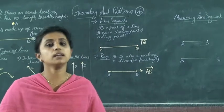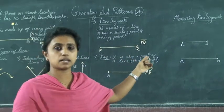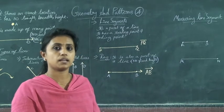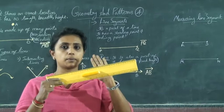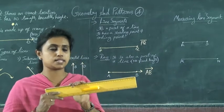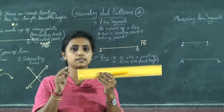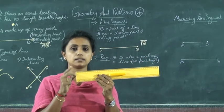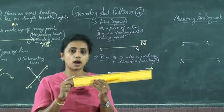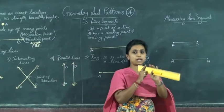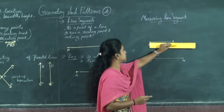Next is Measuring Line Segments. How do we measure a line segment? For this, we use a ruler or scale. First, place the 0 mark of the scale on point R. While placing the scale along the segment, the measurement reads 20. So Line Segment RS is equal to 20 cm.